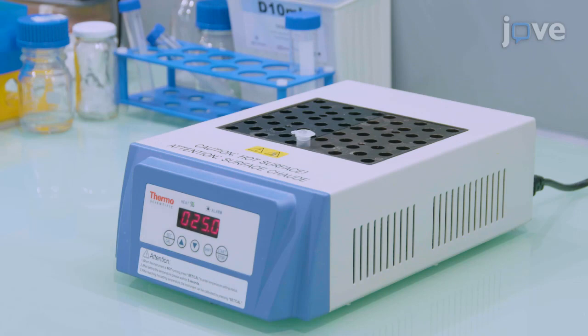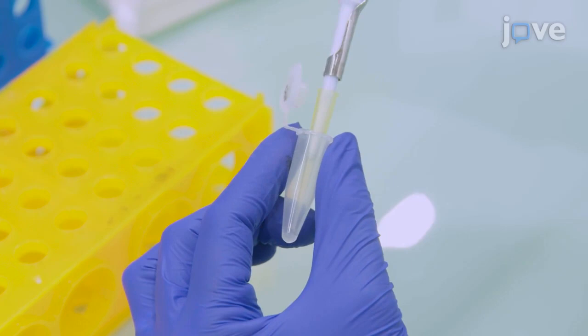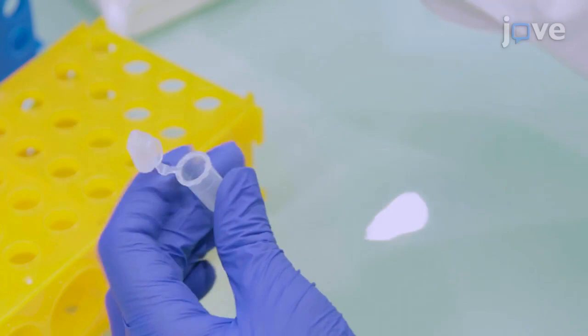After incubation, precipitate the mixture with 1 to 2 volumes of RNase-free water by adding the sample to a microcentrifuge tube containing the water. Then, to include the excipients, add a 20 millimolar HEPES and 4% sucrose solution in the same volume as the mixture.